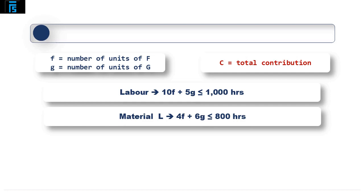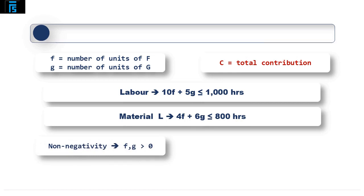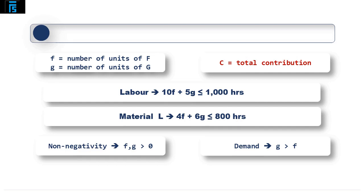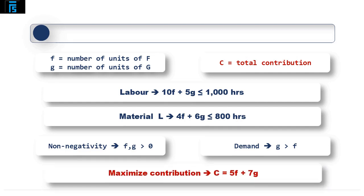We also need to ensure that we make at least 1 franc and 1 greeter as the company wants to make some of each. The formula that covers this is F, G needs to be at least 0. With regards to demand, Alphabet wants to make more greeters than francs, so we can define this formula as G being greater than F. And finally we can state the objective function, which is to maximise contribution. This formula is based on the contribution that each unit of franc and greeter can generate, and therefore it becomes C equals 5F plus 7G.